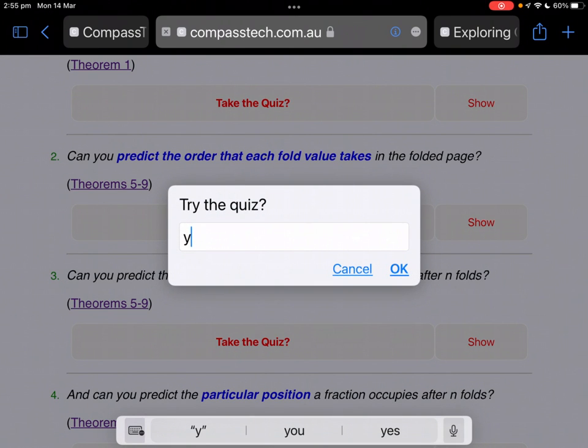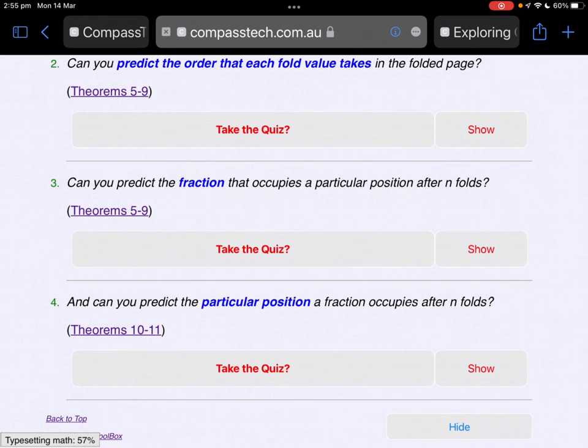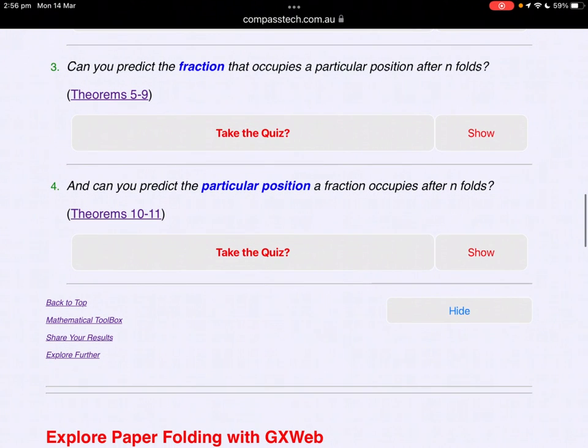We could try the quiz, but I think we'll move on. The next section, can you predict the fraction for a particular position after n folds? So for instance, after 6 folds, what would lie in the twelfth position? We're going to skip that for time here, we'll let you explore another time. And let's go to the last part, predicting the particular position a fraction occupies after n folds. So given a fraction, where would you find it?